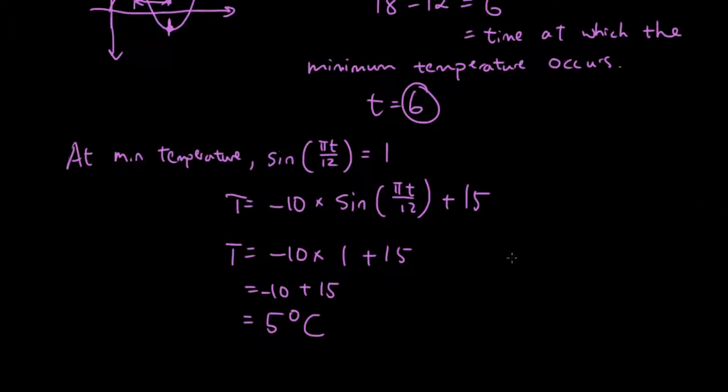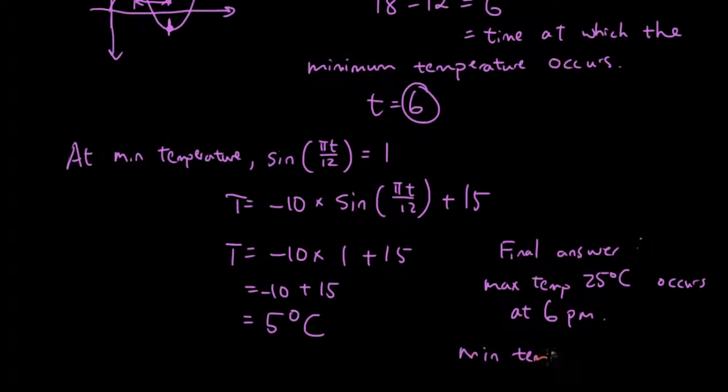So the final answer: maximum temperature 25 degrees Celsius occurs at 6 pm, and minimum temperature 5 degrees occurs at 6 am.